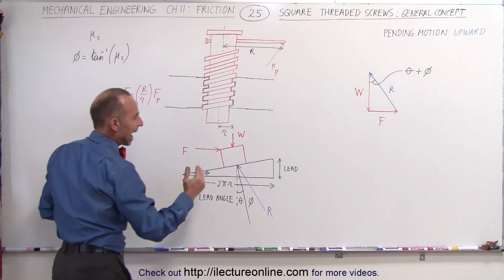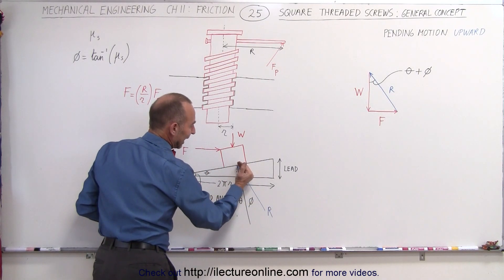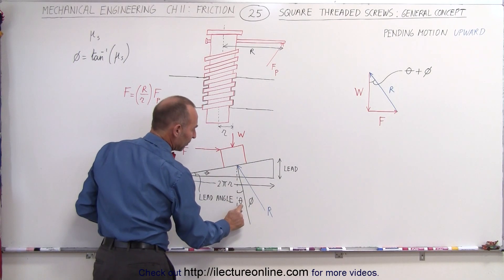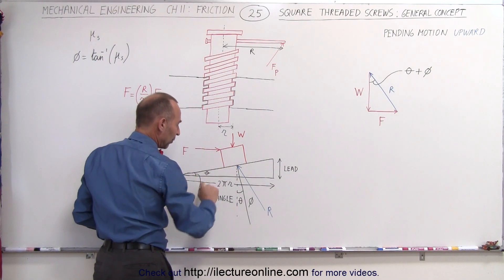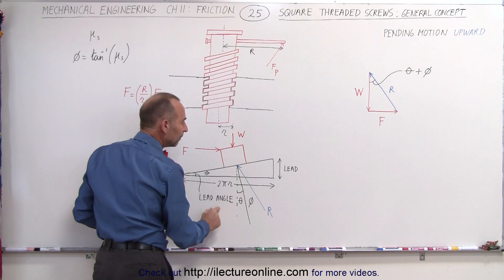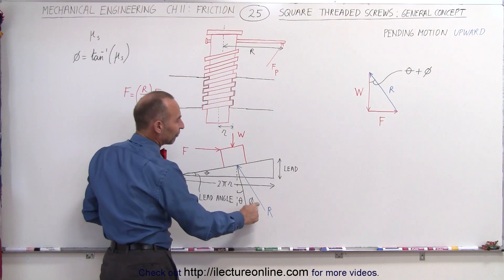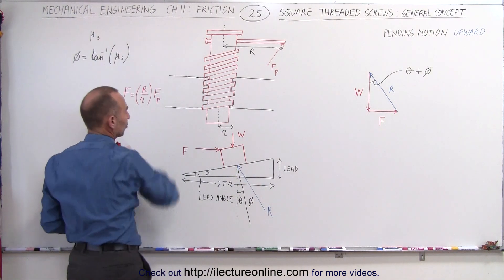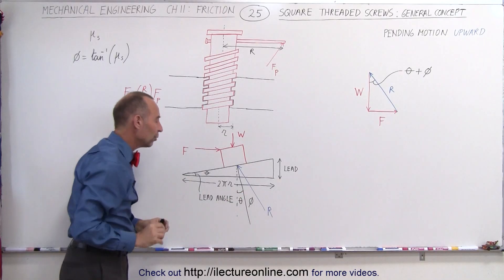Such that the angle of the reactionary force and the vertical will be the sum of the angle made by the thread, which is called the lead angle, and the angle phi, which is caused by the coefficient of static friction. You must add those two angles together.